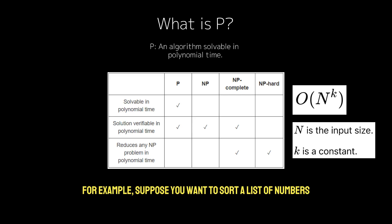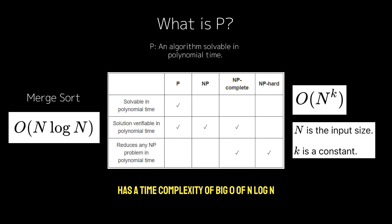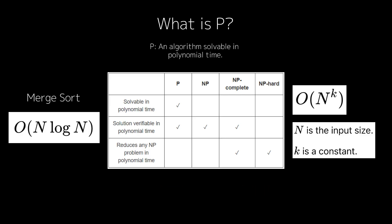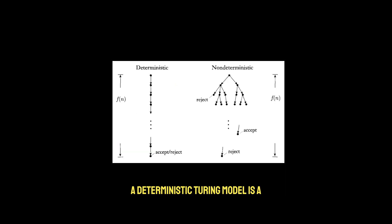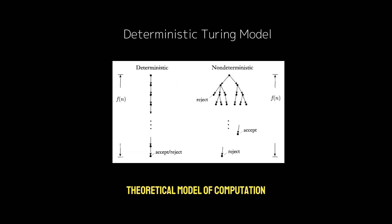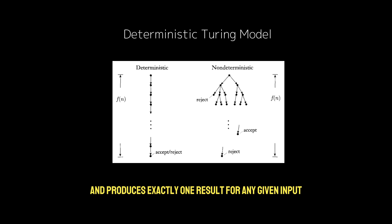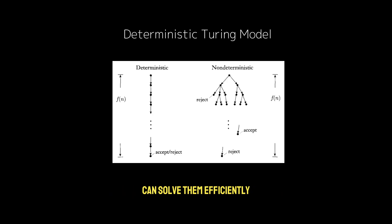For example, suppose you want to sort a list of numbers. A well-known sorting algorithm like MergeSort has a time complexity of O(n log n), which is a polynomial time complexity. As the input grows, the time it takes to sort the list grows at a manageable rate, so sorting is in P. A deterministic Turing machine is a theoretical model of computation that follows a set of rules — the algorithm — and produces exactly one result for any given input. For problems in P, a deterministic Turing machine can solve them efficiently with zero ambiguity in the process.